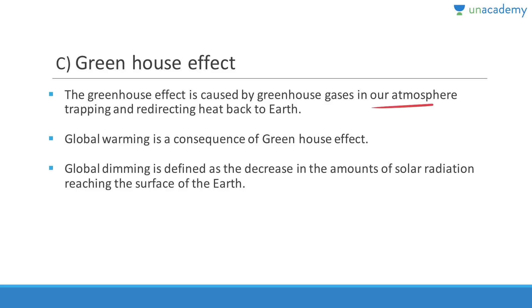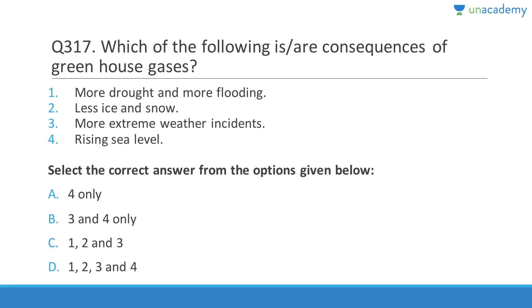Question 317: Consequences of greenhouse gases include more drought and flooding, less ice and snow, more extreme weather incidents, and rising sea levels. Answer is D (all of the above). Warmer weather increases evaporation, causing drought where rainfall doesn't compensate; more heat waves and violent rainfall; sea levels rise due to melting ice/snow and thermal expansion of seawater.